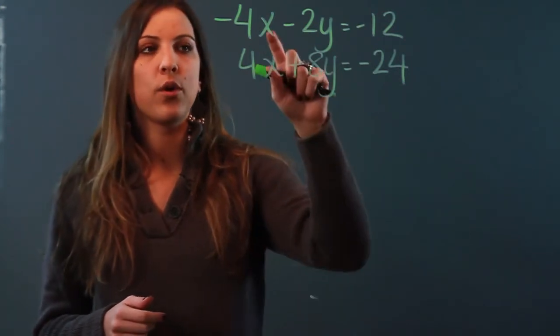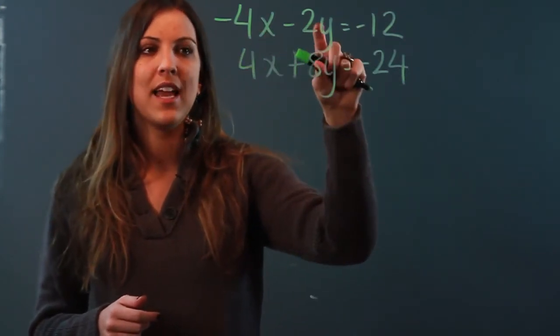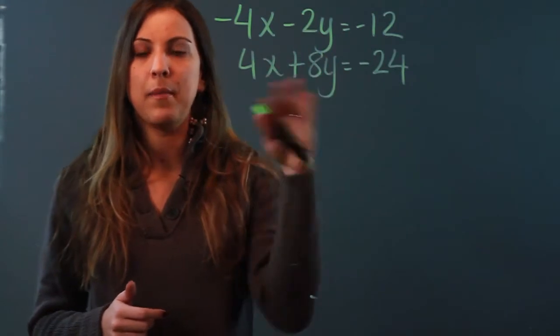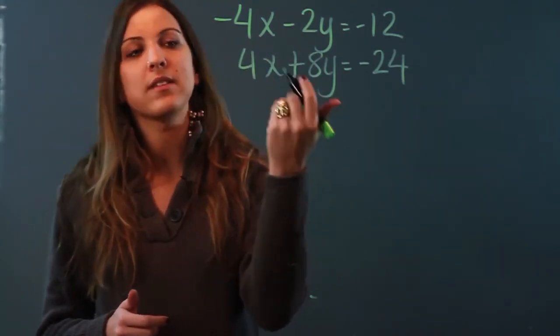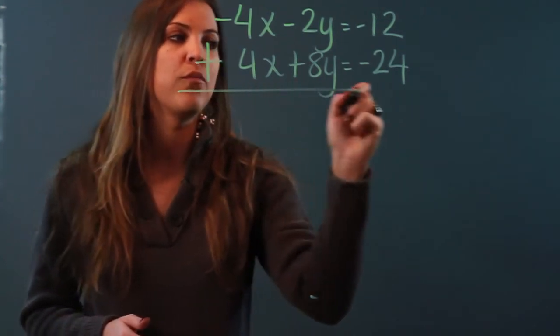So what you're looking for is for one of the pairs of coefficients to be opposite so that you can add them and they can cancel each other out and I see that I have a negative 4x and a positive 4x so that means that I'm going to add them rather than subtracting.